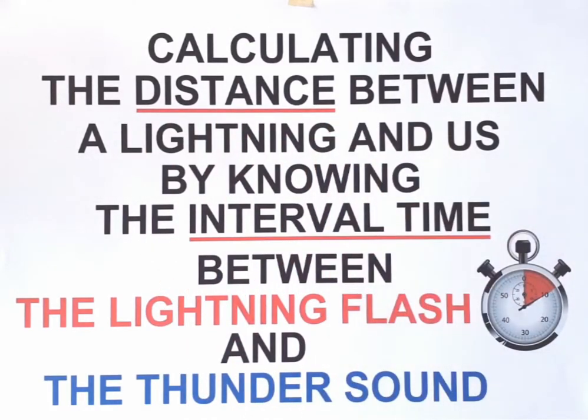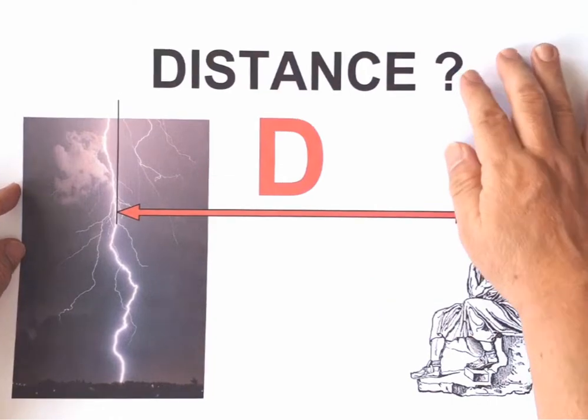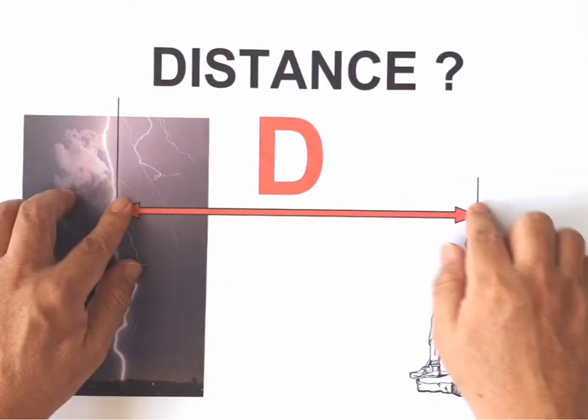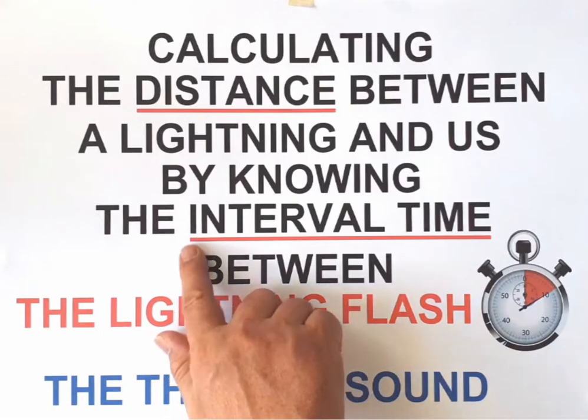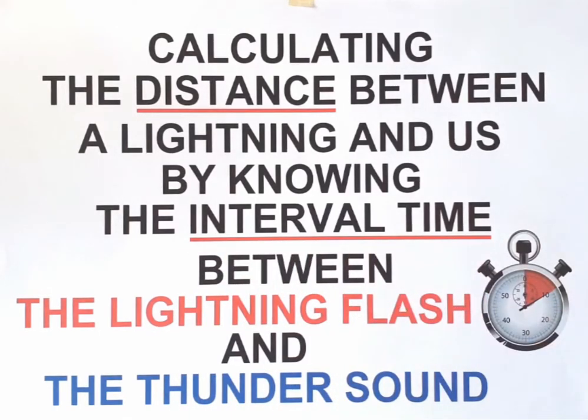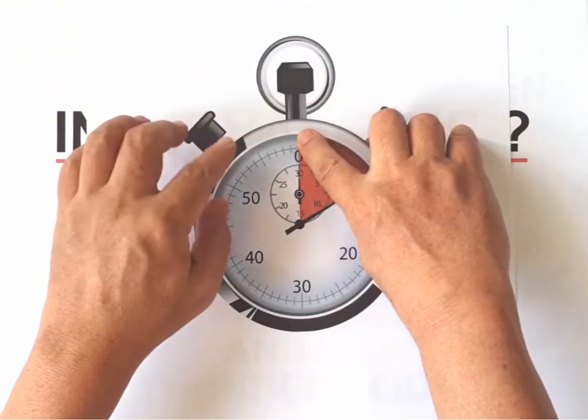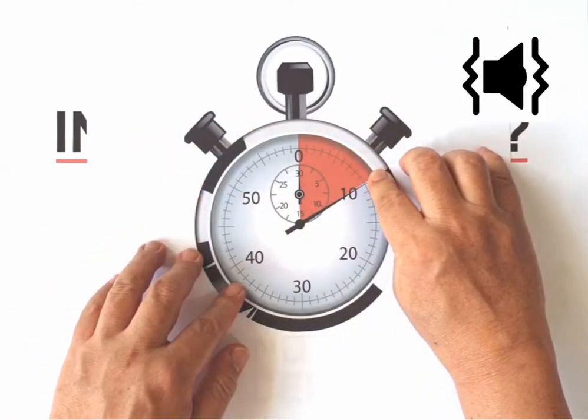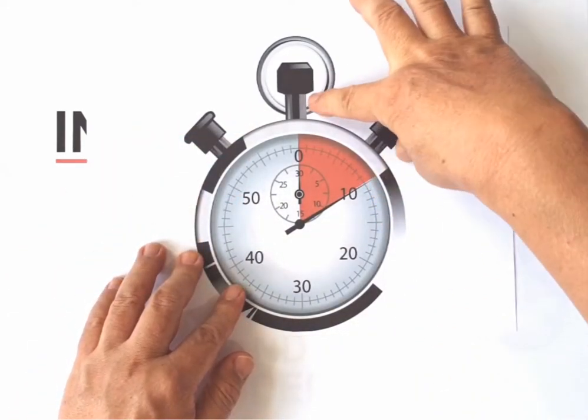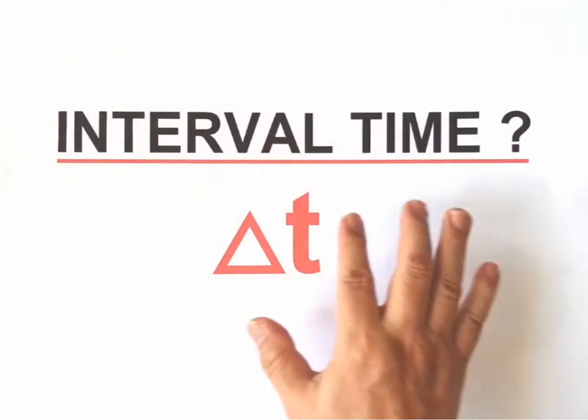What is a distance? A distance means a space between the lightning and you, and later on we will denote it as capital D. And what is interval time? It's like when you have a stopwatch, you start exactly when the flash hits, and you stop precisely as the sound arrives. That interval value we will later denote as delta T.